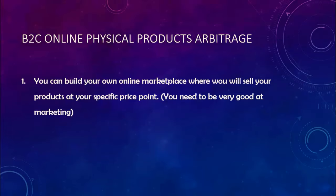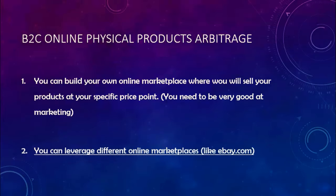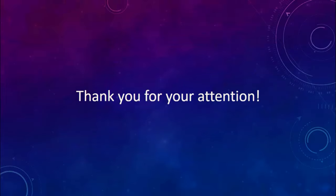The method we will focus on — the one anyone can start with zero money — is leveraging different online marketplaces. For example, you can find products on Amazon at $15, and on eBay those same products sell for $25. You list the Amazon product on eBay for $23 and make an $8 profit. You are leveraging online marketplaces and profiting from the different price points they have. That's about it for this lecture.